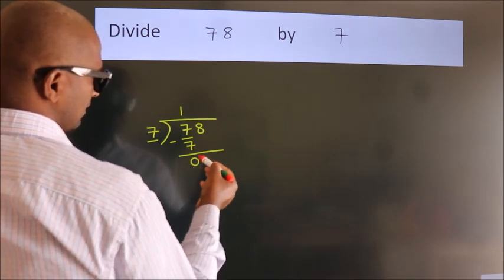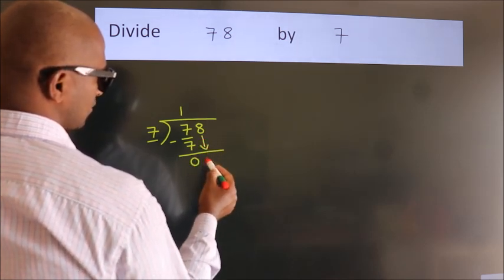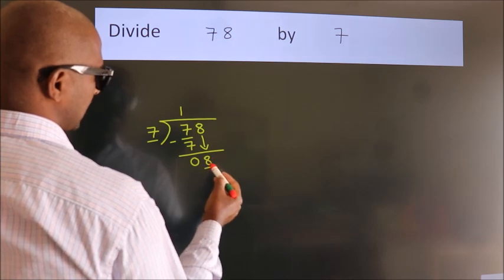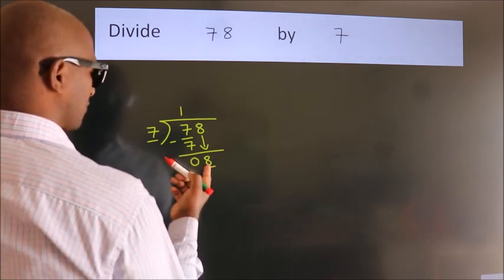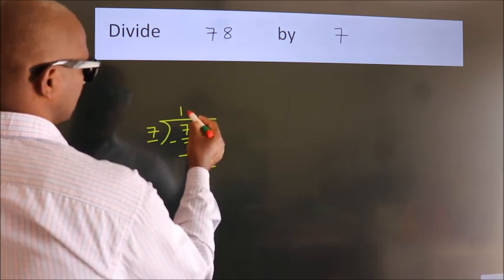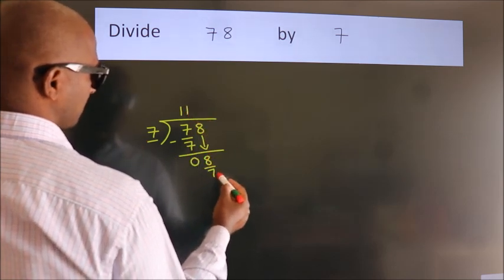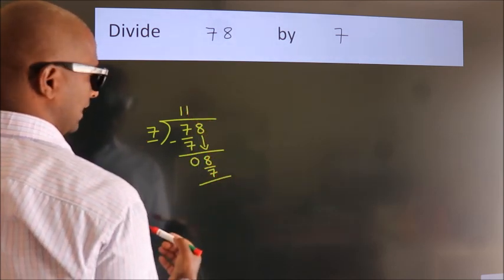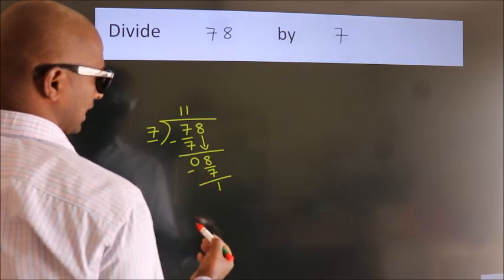After this, bring down the beside number. So 8 down. So 8. A number close to 8 in 7 table is 7 once, 7. Now we subtract. We get 1.